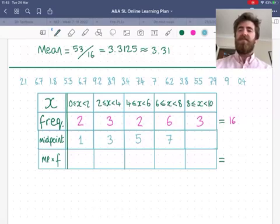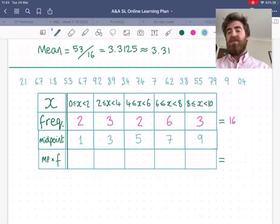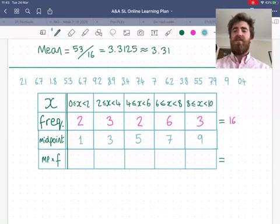Halfway between 4 and 6? 5. 7. And 9. So we're going to use those. We're going to assume that every point is roughly, on average, at that midpoint. And we're going to start multiplying using that midpoint instead.